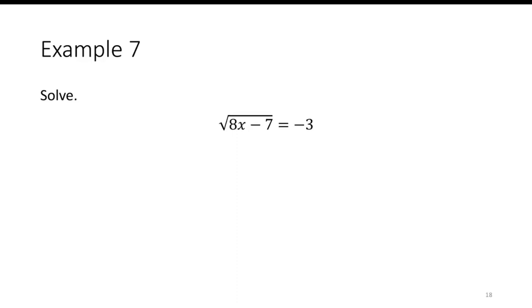What if I have the square root of 8x minus 7 equals negative 3? In this case, we could stop right now because we know that a positive square root is not going to be equal to negative 3. But let's go ahead and solve this anyway. If I square both sides, I'll have 8x minus 7 is equal to negative 3 times negative 3, or positive 9. I add 7 to get 16, divide by 8 to get x equals 2.